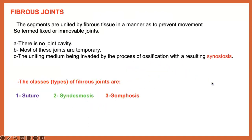The first type is the fibrous joint, where the uniting medium is fibrous tissue. This joint is characterized by the absence of a joint cavity. This joint is a temporary joint, and over time it becomes solid — this process is called synostosis, meaning the ossification of the joint.